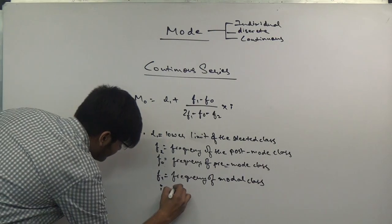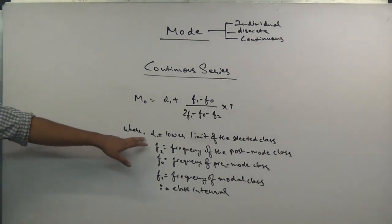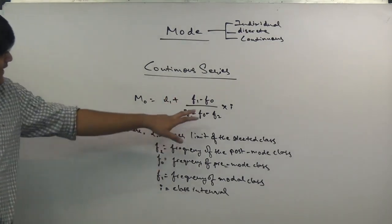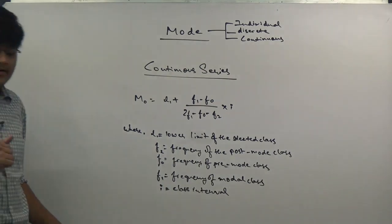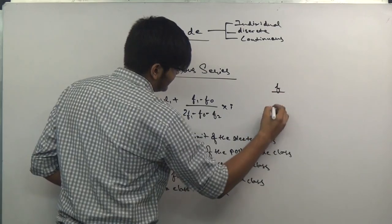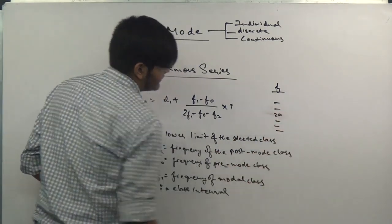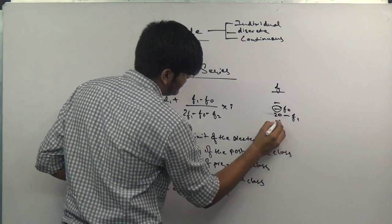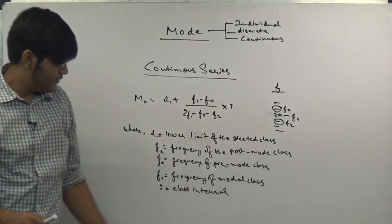i is equal to class interval. l1 is the lower limit of the selected class, f1 is the frequency of the modal class itself, f0 is the frequency of the premodal class, and f2 is the postmodal class. We will do a sample sum. For example, if there are 5 or 6 frequencies and this is 20, this will be f1, the above one would be f0, the below one would be f2. This is what it means: premodal, modal, postmodal.